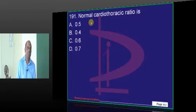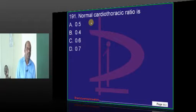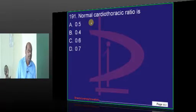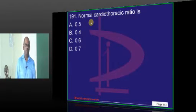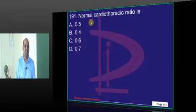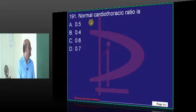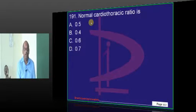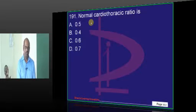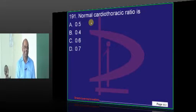Normal CT ratio is? Classical question. The answer is 0.5. Students were proposing 0.7 and 0.4 — Fahima proposes 0.5 and gets a big clap.